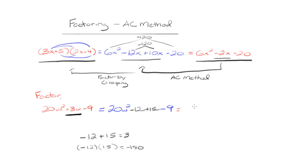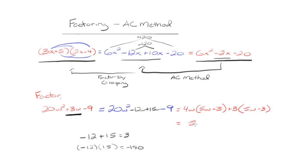Now we factor this four-term polynomial by grouping. I'll pull out 4w from the first two terms, and 3 from the second two terms. Completing the factor by grouping gives us the result: 5w minus 3, times 4w plus 3.